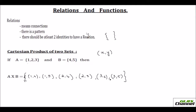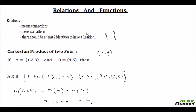I will tell you how to find out the number of ordered pairs in a Cartesian product. The number of elements in A cross B would be equal to the number of elements in A times the number of elements in B. In this case, the number of elements in A is 3 and in B is 2, and that is how you got 6 ordered pairs in A cross B.